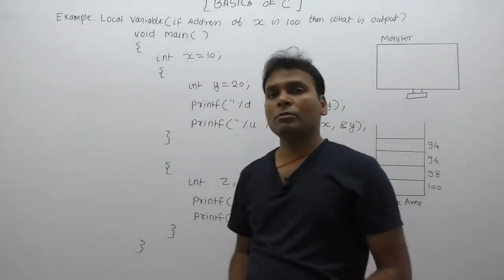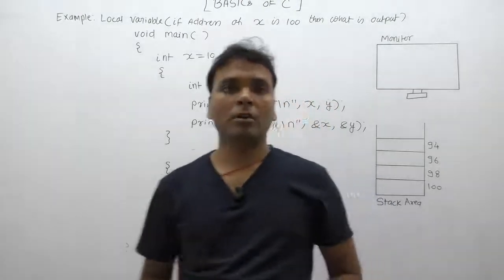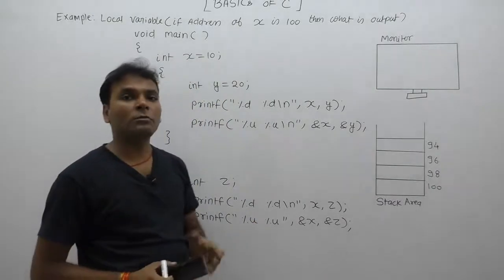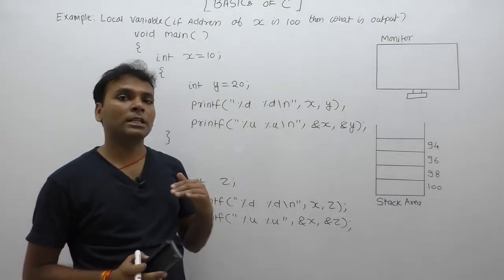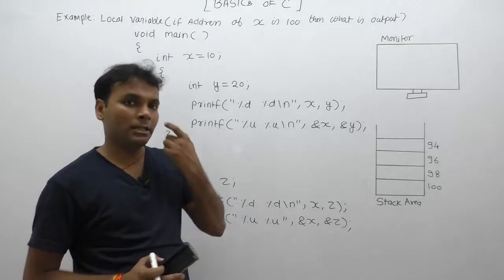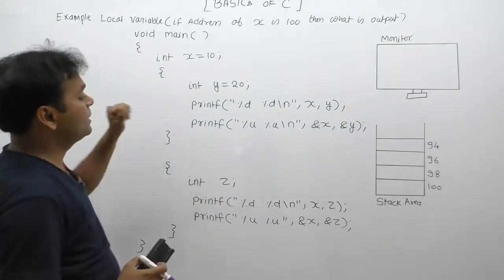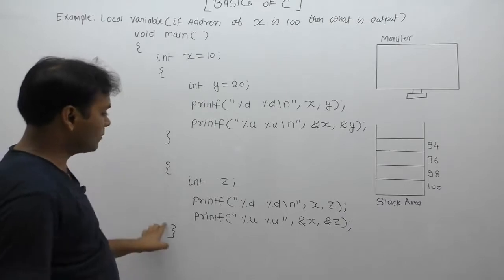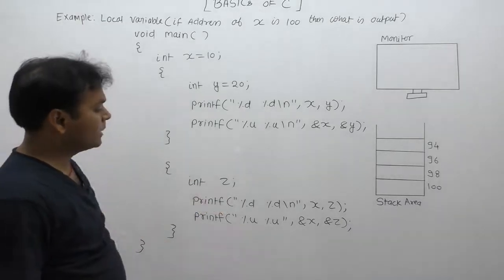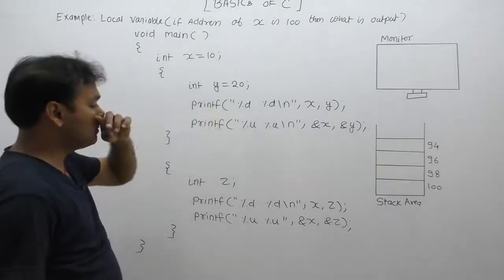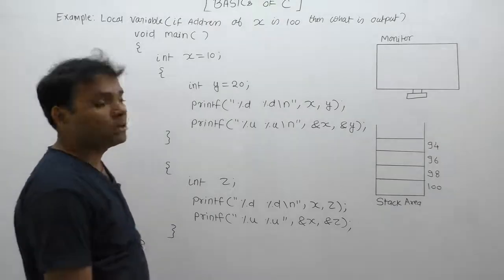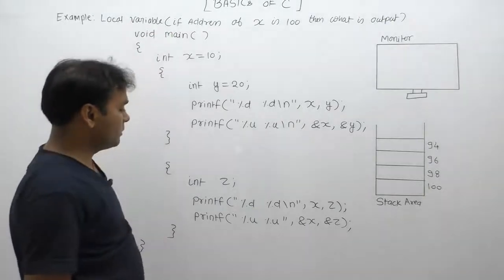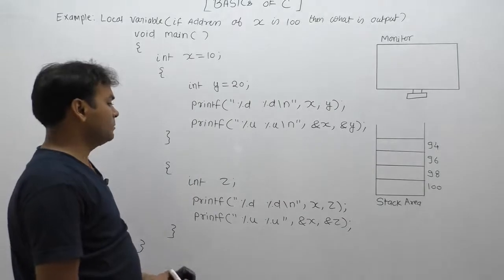Now another example with respect to local variables, scope, and memory representations. As we know, the default value for local variables is garbage. Here we are creating three variables in different blocks: x is created inside the outer block, y is created inside an inner block, and we are creating a separate inner block containing variable z. Y is initialized by 21, z is not initialized by any value, so the default value for z is garbage.